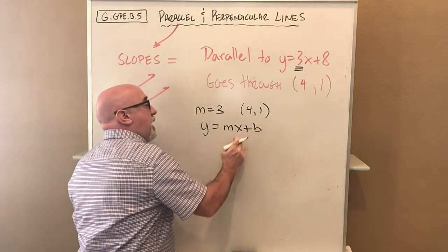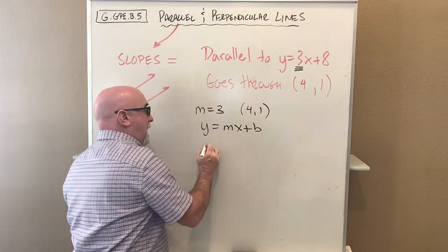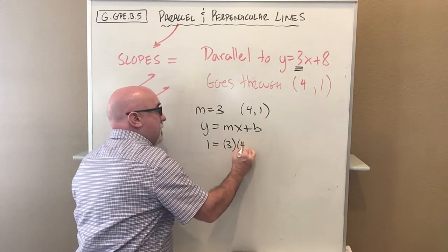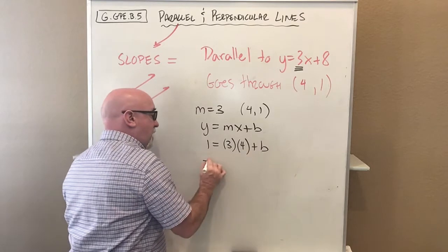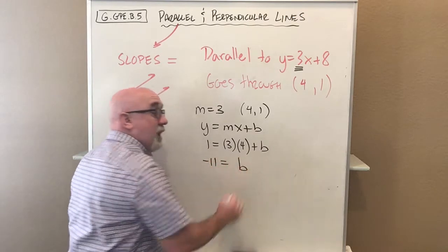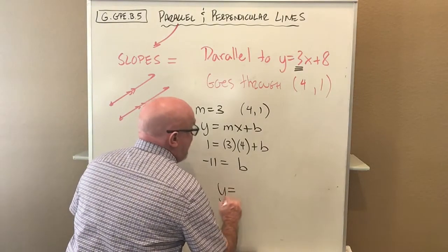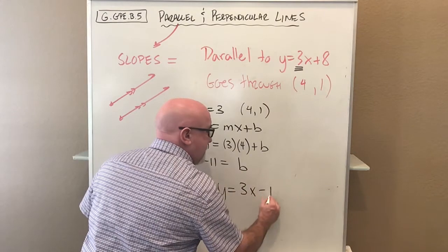We know everything except b. We know m, we know x, and we know y. Let's put in our y, our slope, our x, our b. This is 1 minus 12 becomes negative 11. As I predicted, we have a very large negative number. This is a slope of 3 and goes to negative 11.